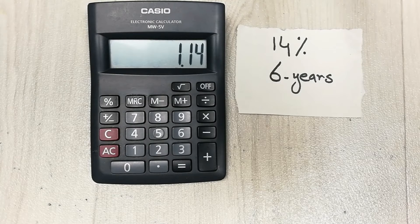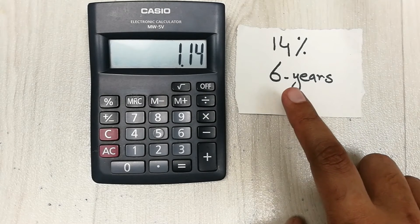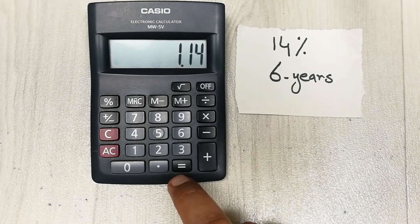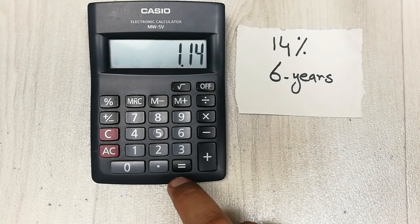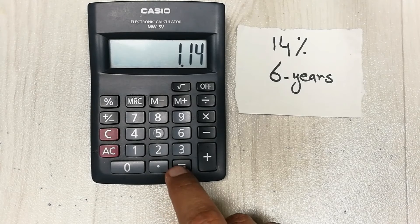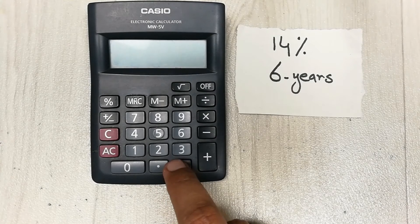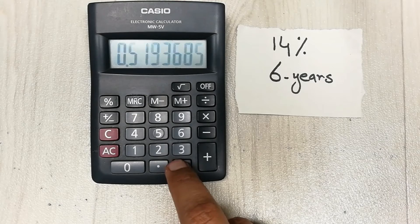And then because our period is six years, we have to press this equal button six times. This is our fourth step. So now we press this equal button six times: 1, 2, 3, 4, 5, 6.